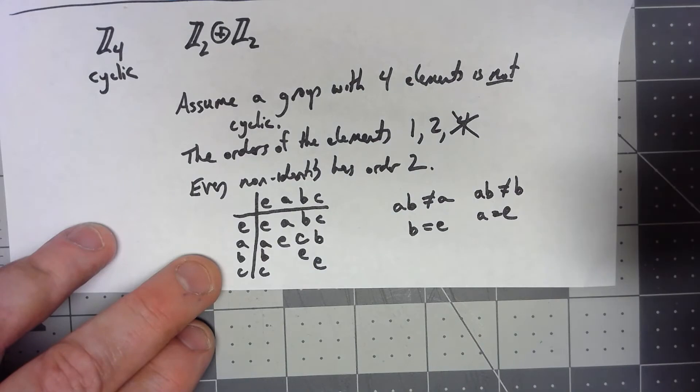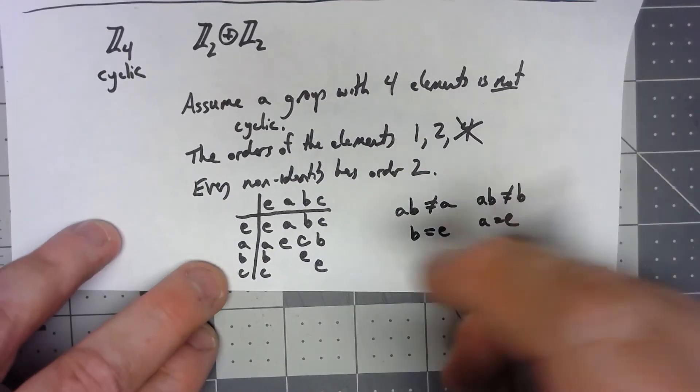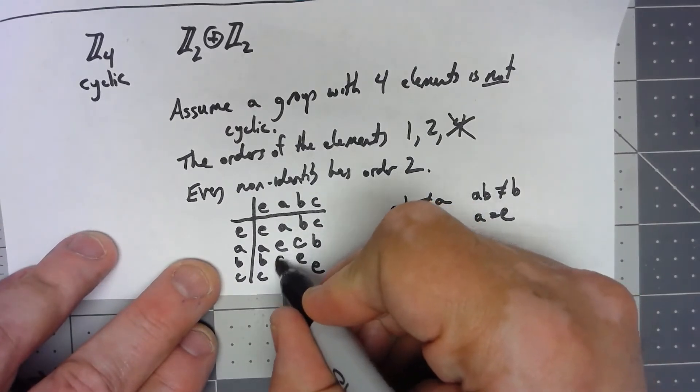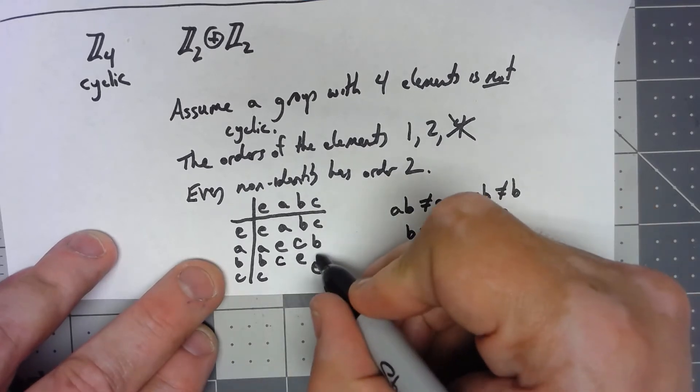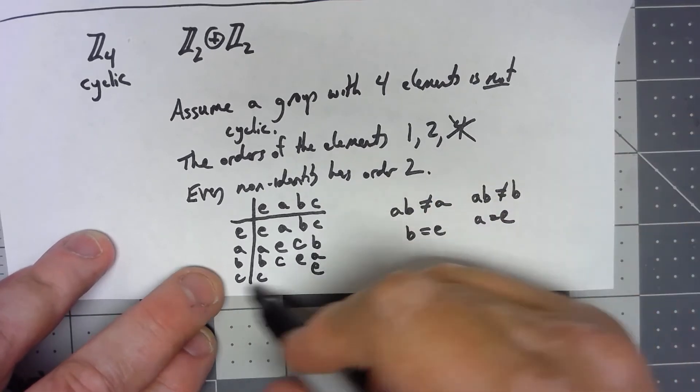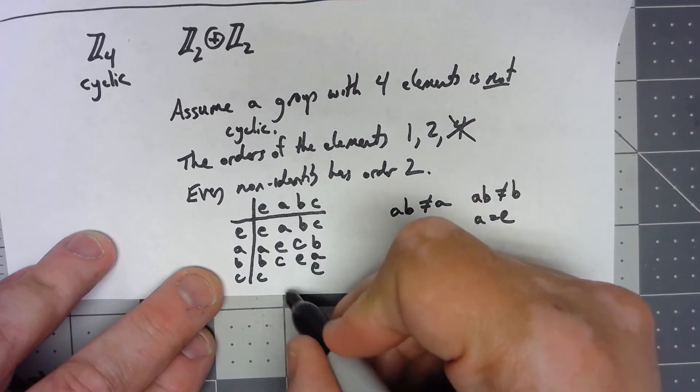B times A would have to be C. B times C would have to be A. C times A would have to be B, and C times B would have to be A.